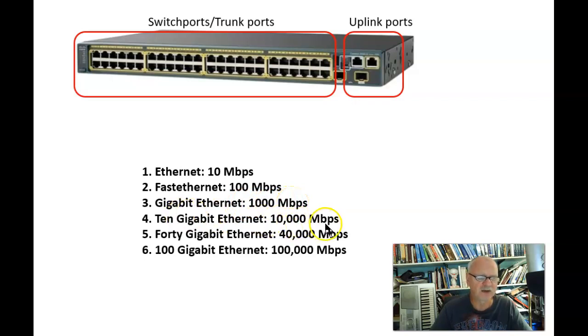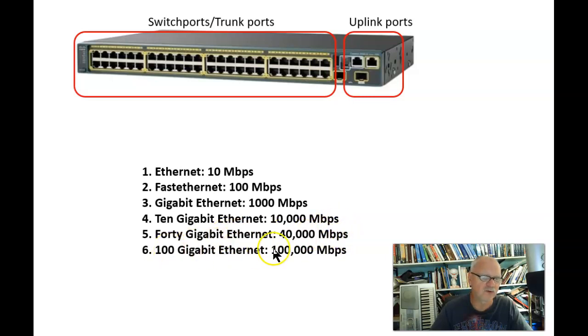10 Gigabit Ethernet is 10,000 megabits per second. 40 Gigabit Ethernet is 40,000 megabits per second. 100 Gigabit Ethernet is 100,000 megabits per second.